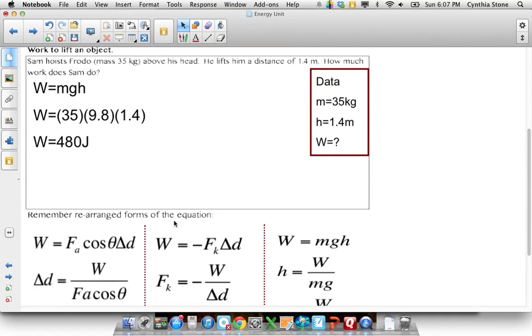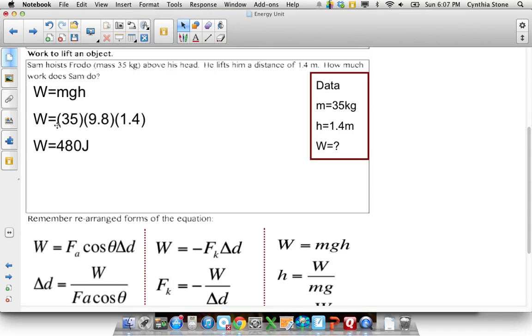If you're lifting an object, you're lifting an object, then you use the formula MGH. M being the mass of the object you're lifting. G is 9.8. See that? H is the height, how high you're lifting it. So anytime you're lifting, this is the formula you use. So very specific to raising an object up. So just sub in, 480 joules, Sam lifting Frodo, and that's it.